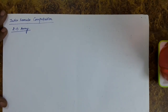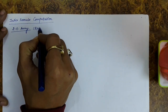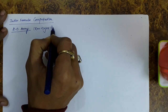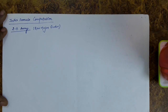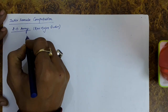In this lecture we will discuss the index formula computation for the two-dimensional array. We are assuming that the elements are stored in row-major order fashion, which means we will first store the elements of the first row, then the elements of the second row, then the third row, and so on.